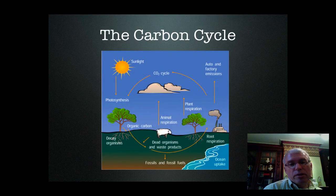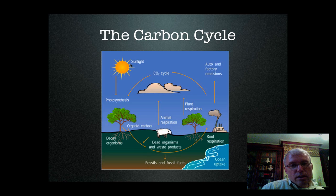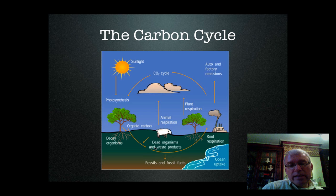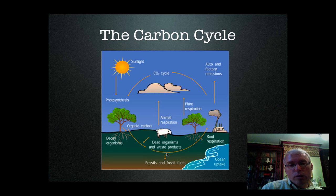Here's a picture of the carbon cycle, and I want you to notice a few things. The energy from the sun is driving photosynthesis, which is taking carbon dioxide from the atmosphere inside of a producer and producing something called organic carbon, or biomass, or carbohydrate. This material can then go a couple of different places — it can accumulate underground and form fossil fuels like natural gas, coal, and petroleum.